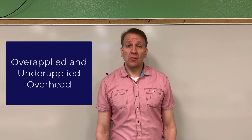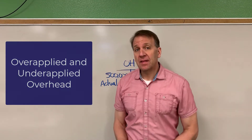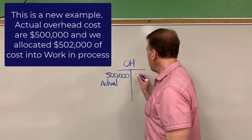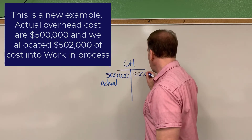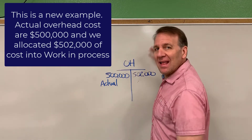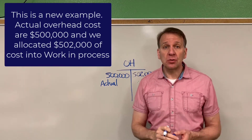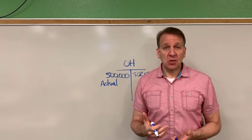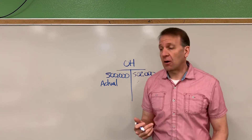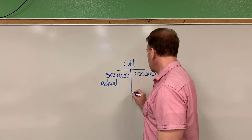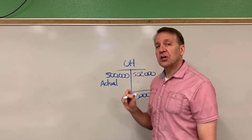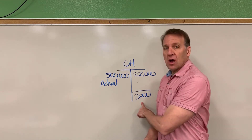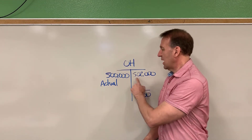Now we're going to look at the overhead account at the end of the year. In this example, the actual overhead costs are $500,000, and the amount that we allocated into work in process was $502,000. At the end of the year, this overhead account doesn't appear on any financial statement, so it can't have a balance — it has to be zeroed out. In this example, we over-applied or over-allocated by $2,000, because the credit side is higher by $2,000.